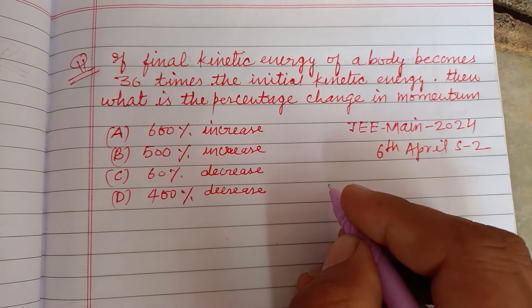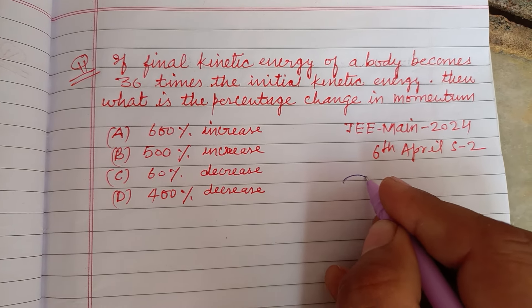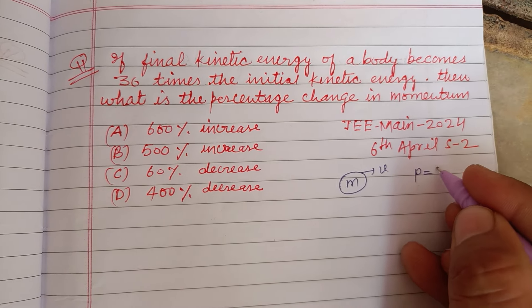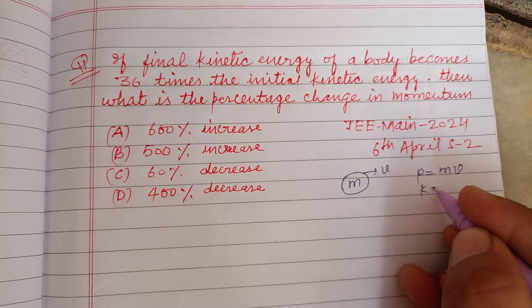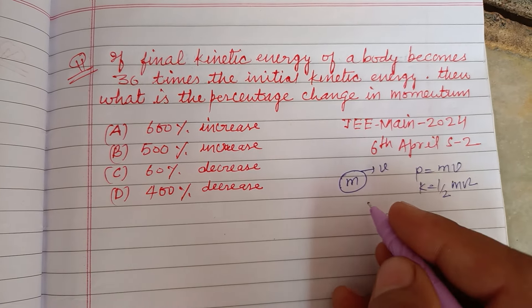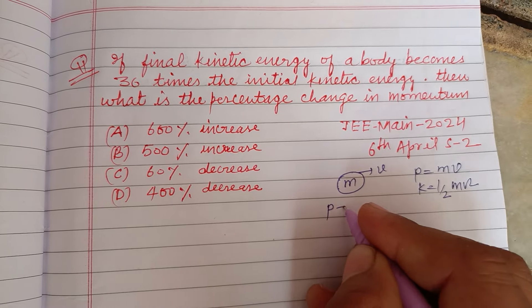Students, you know that if a body of mass m moving with velocity v, its momentum P equals mv, and kinetic energy K equals half mv squared. When we simplify this, we get P equals square root of 2km.